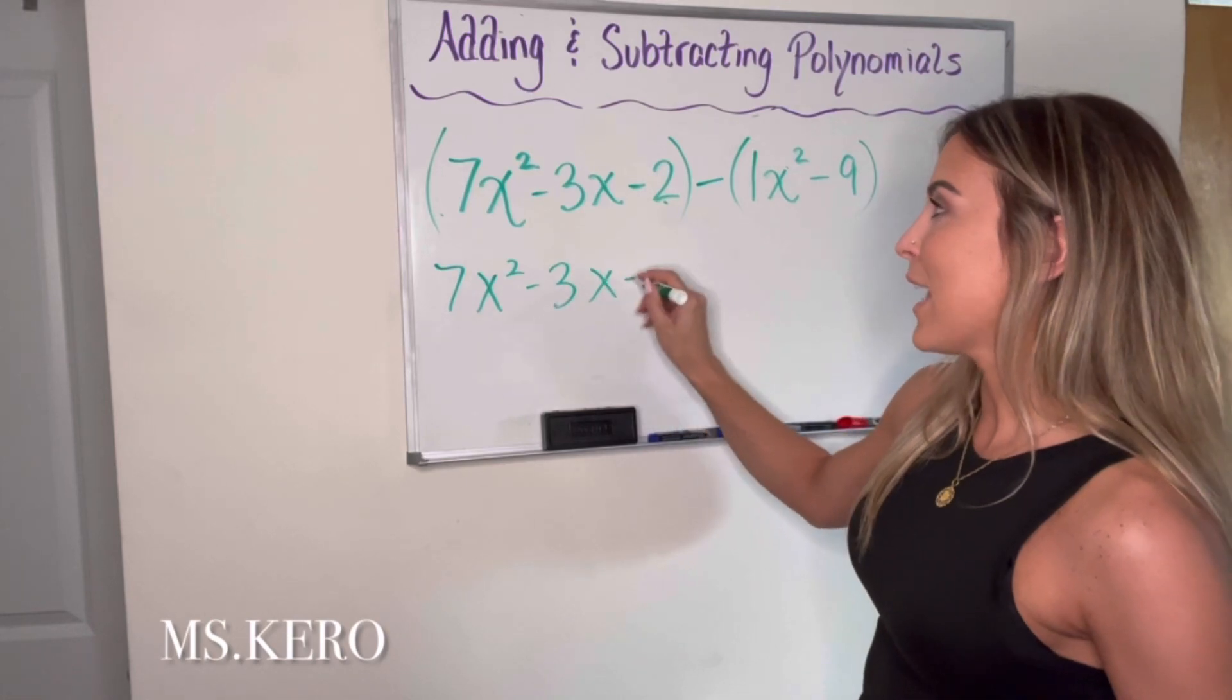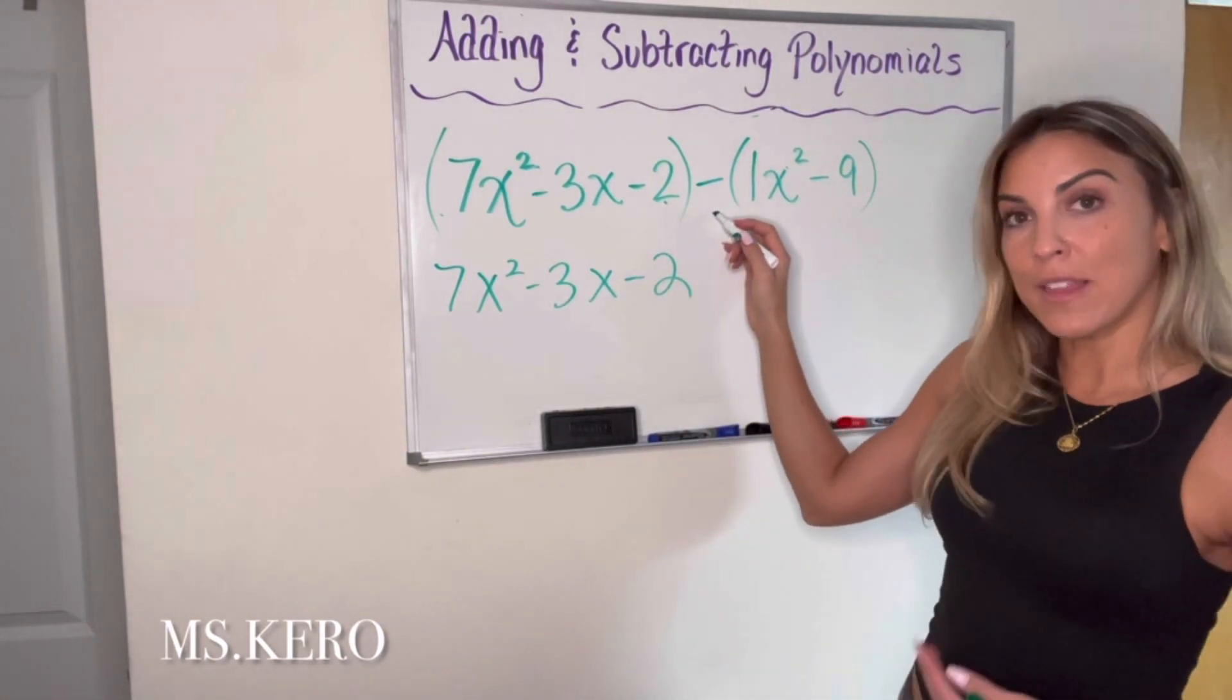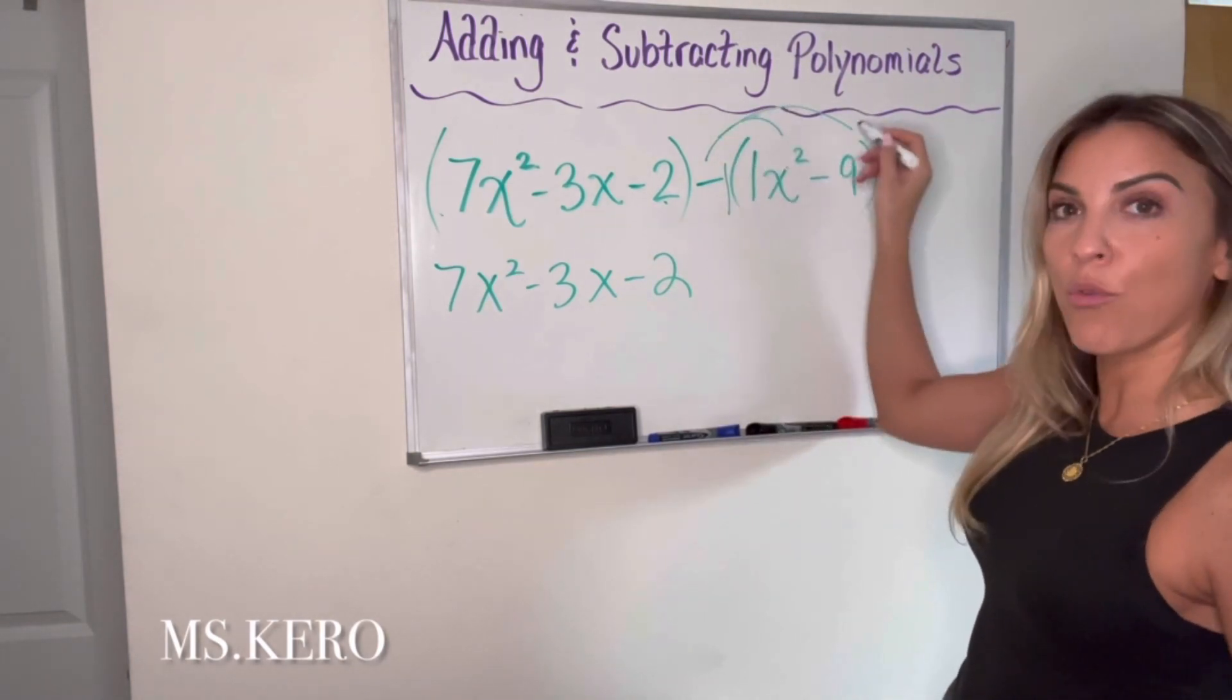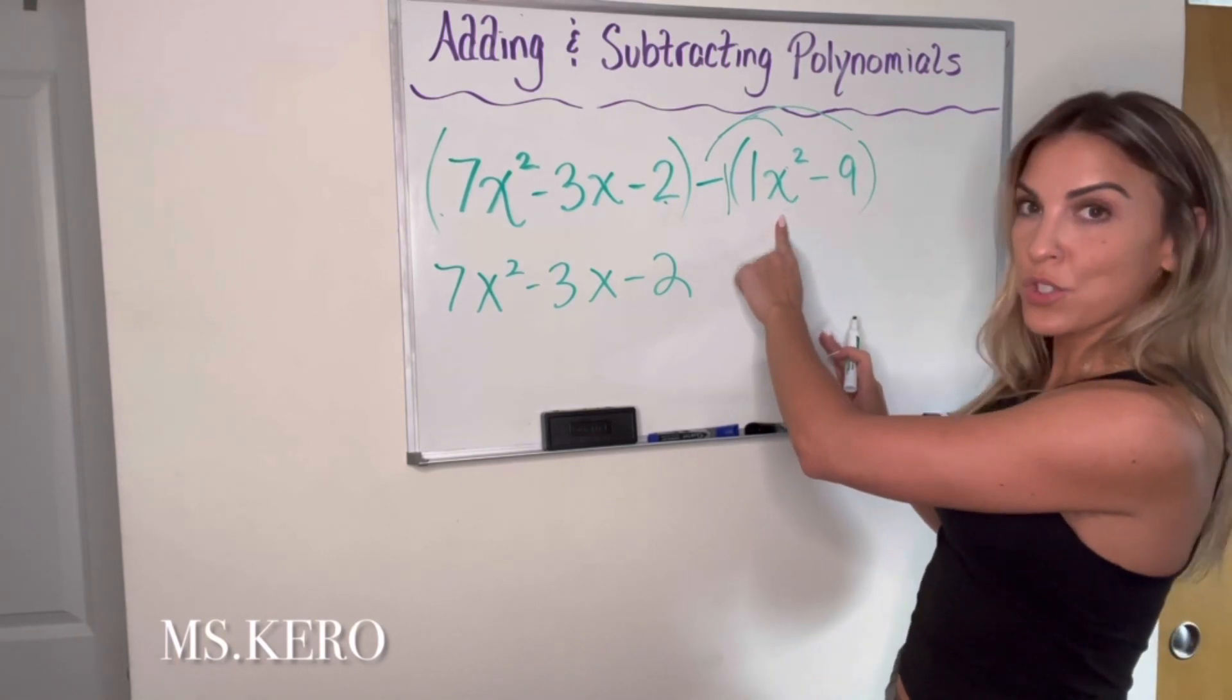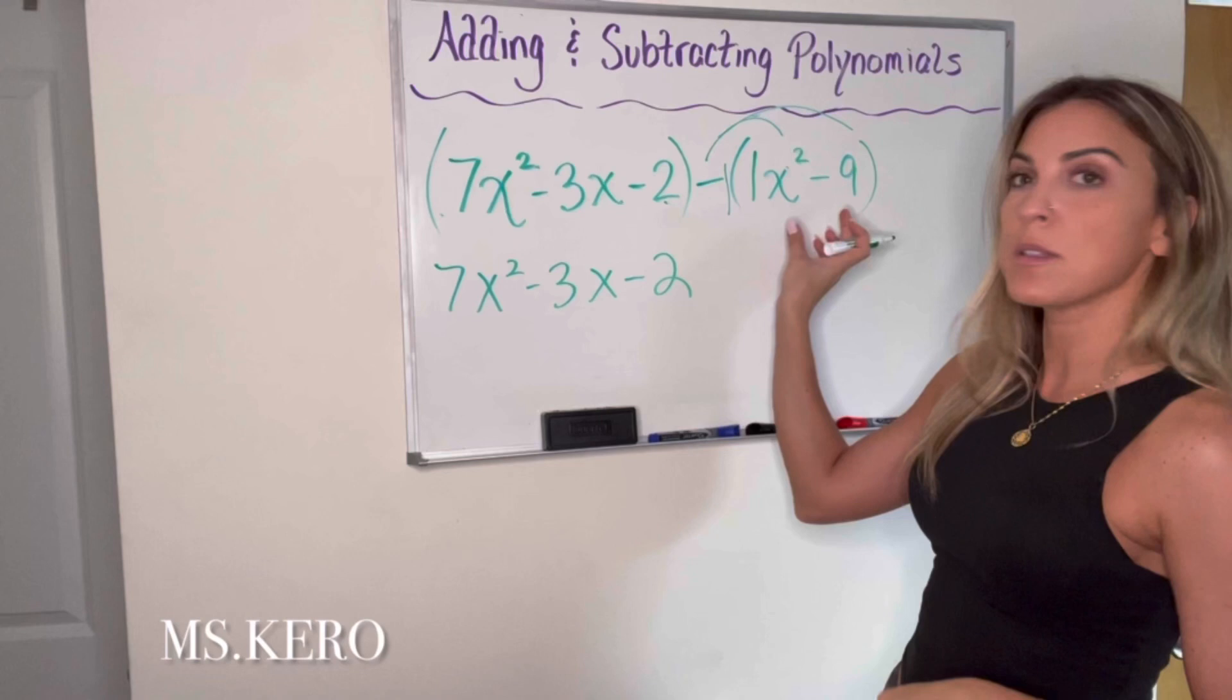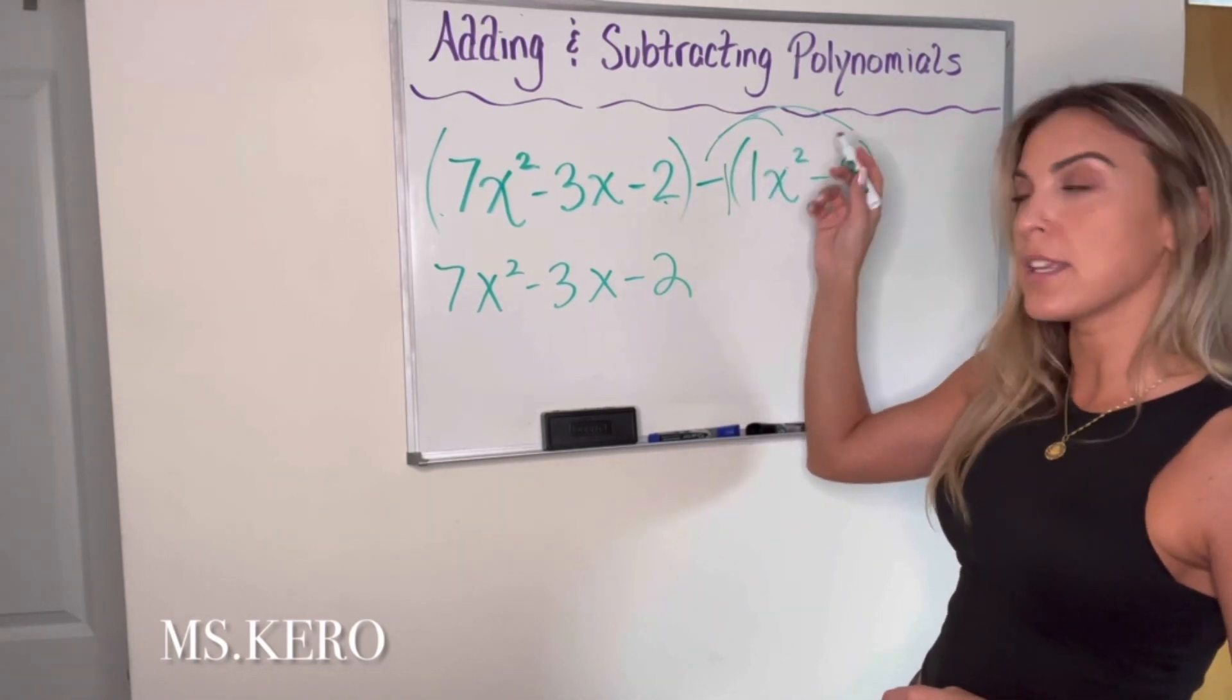However, the second parentheses, there is a minus sign in front of it. So I'm going to look at that minus sign as a negative 1 that's going to be distributed out, right? Because I'm not just subtracting this first term. I'm subtracting everything in this parentheses. So to show that I'm subtracting everything in this parentheses, I have to distribute out that minus sign.